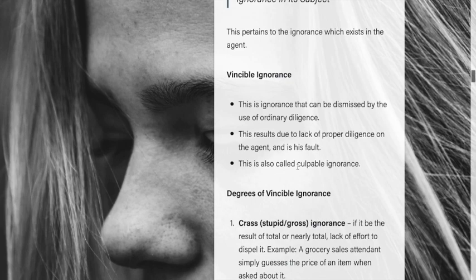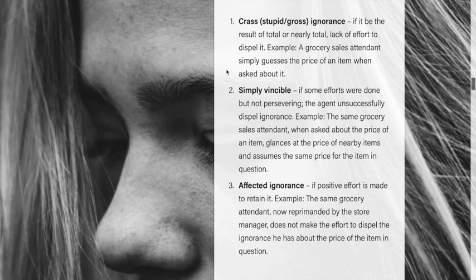There are different degrees of vincible ignorance. First is crass ignorance, also called stupid or gross ignorance — it results from total or nearly total lack of effort to dispel it. For example, a grocery sales attendant simply guesses the price of an item when asked, making no effort to find out the correct price. The attendant is culpable for that ignorance.